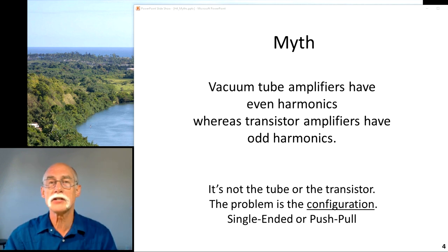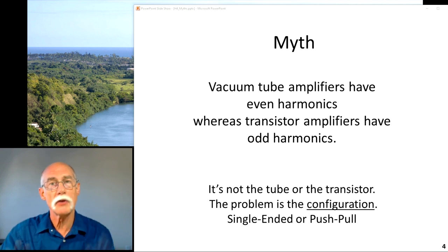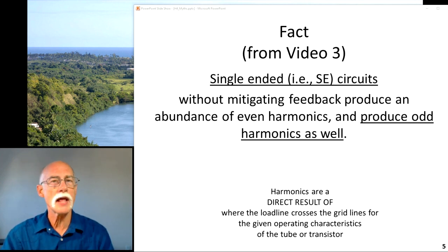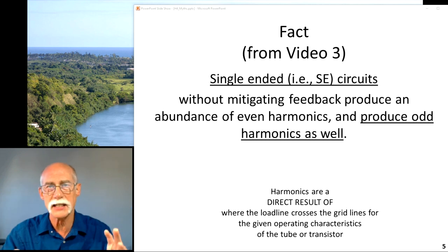So first myth. Vacuum tube amplifiers have even harmonics, whereas transistor amplifiers have odd harmonics. From the last video, we've dispelled that one. I've shown you the harmonic power curves, both a triode and a pentode, and they both have second and third order harmonics. They occur differently depending on the load for each, but a tube and a transistor both exhibit even and odd harmonics. The key gets down to how you operate in order to mitigate those harmonics, single-ended or push-pull.